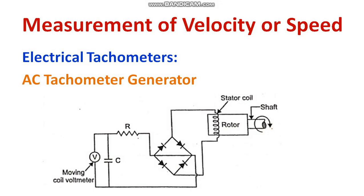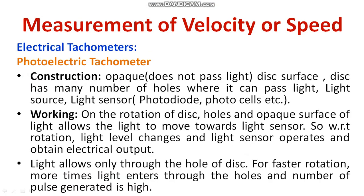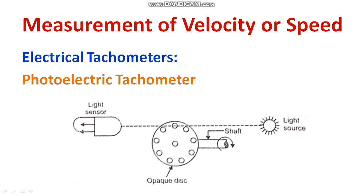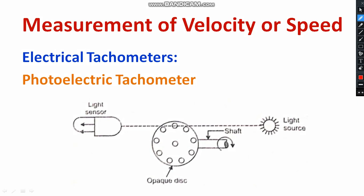I hope you understood the difference between the DC tachometer generator and the AC tachometer generator. Another method is the photoelectric tachometer. To understand its construction and working, we consider an opaque disk. Opaque means it never transmits light. In that opaque disk, there are a number of circular holes which allow light to pass through, while the overall disk does not pass the light.